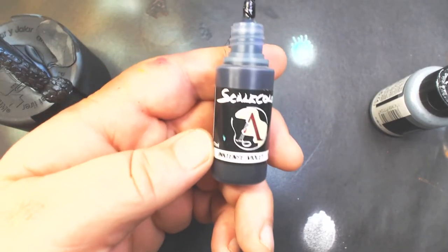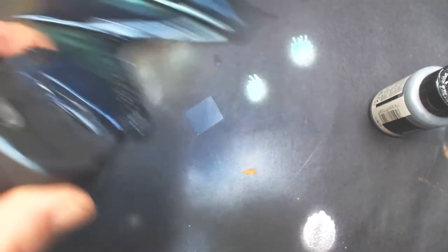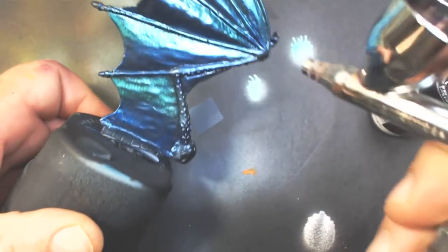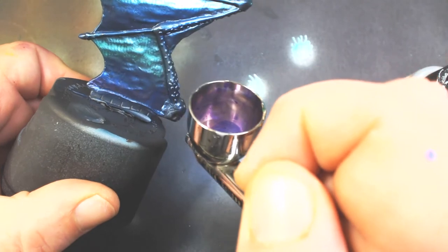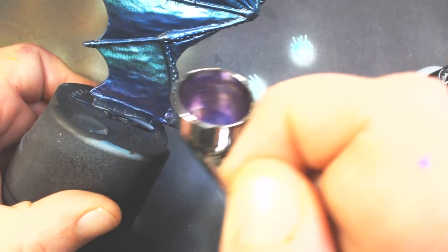And then now same thing again, this time with the Scale Color Violet. And this time we'll do the bottom of every section. So basically it transitions from green to blue to purple.